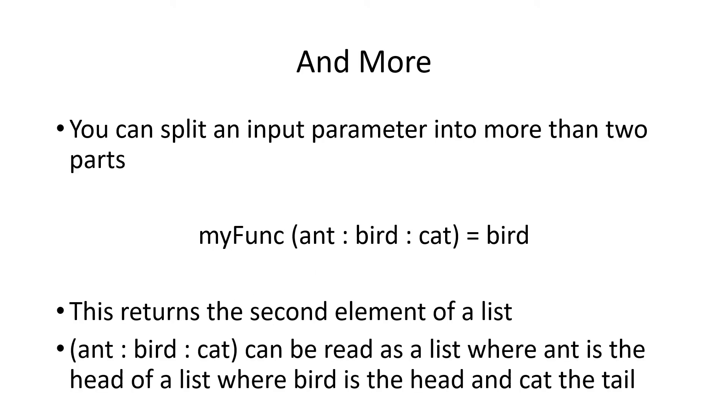You can split it into three parts, where you have the first part, which is the head of the string. And then the next part is the head of the tail, which of course is normally known as the second element of the string. And then in this case, cat is the tail of the string. So if you had a function, you want to take the second character of a list, of a string or a second element of any list, then you split it like this, and ant is the head, bird is the second one, and cat is wherever it comes after that. So that's a very simple way to take the second element of a list.